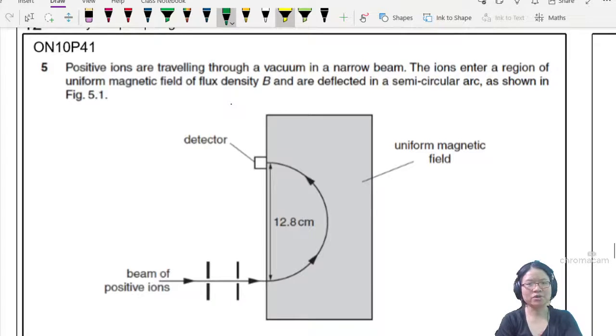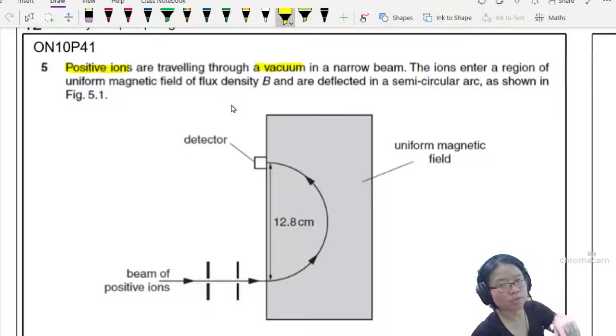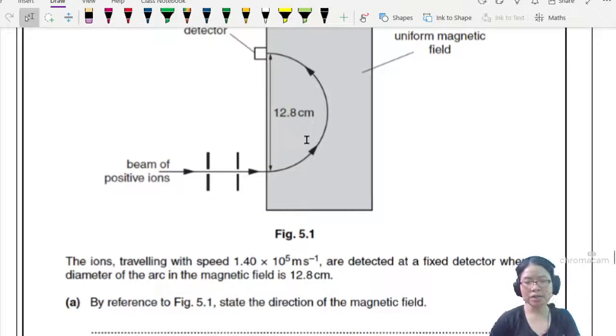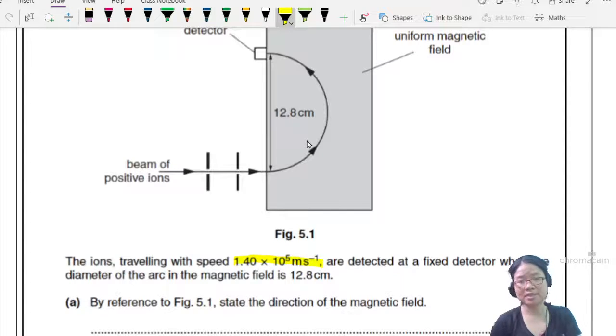We have positive ions traveling through a vacuum in a narrow beam. Ions enter a region of uniform magnetic field of flux density B and are deflected in a semi-circular arc, as shown in figure 5.1. We all know how and why this happens, so I will not go into it. I will jump ahead. The ions traveling at this speed are detected at a fixed detector, but the diameter of the arc in the magnetic field is 12.8 cm.